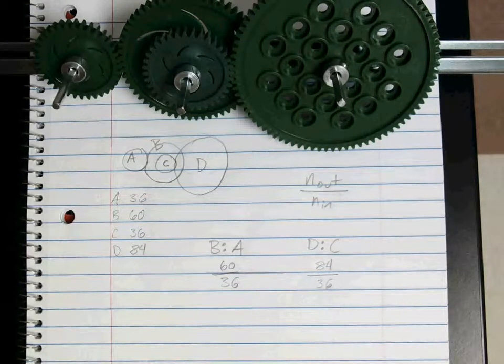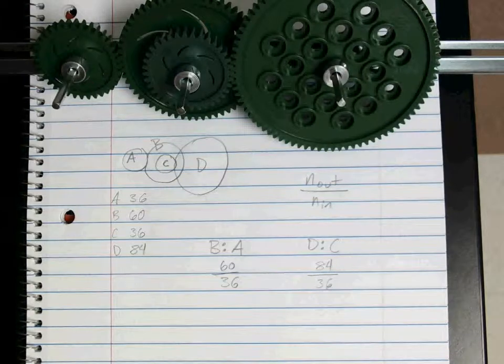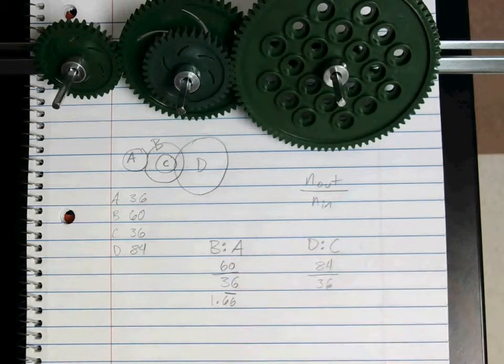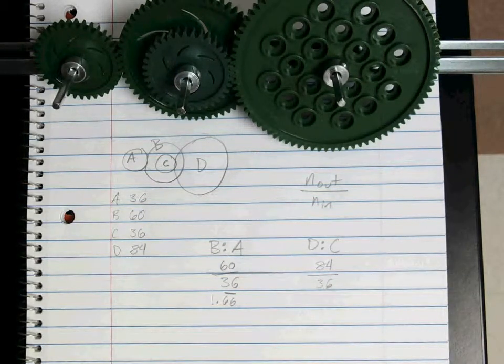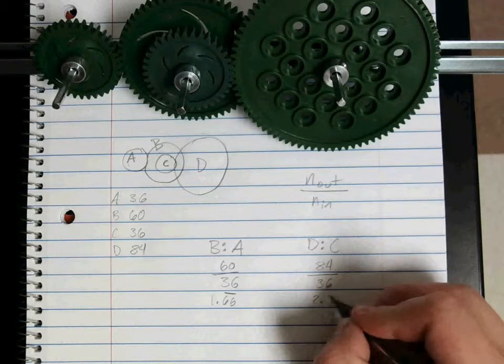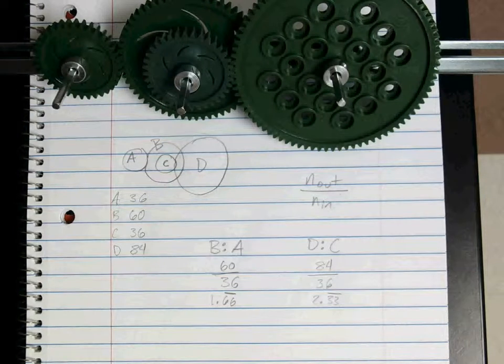So remember we want to simplify these. So we say our 60 divided by our 36, which is going to be 1.66 repeating, so 2 thirds, 1 and 2 thirds. We want our 84 divided by our 36, which is 2.33 repeating, which is 1 third, 2 and 1 third.